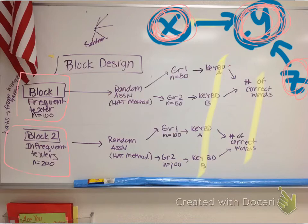And I started, instead of doing the three groups and then drawing a line and seeing random assignment, I started just doing what the book did. And they drew an arrow and said, okay, we need to randomly assign to two groups. We have our 100 frequent texters. Group 1, group 2 of 50 each. One gets keyboard A, one gets keyboard B. And then we look at the number of correct words. We do that again for infrequent texters. They get a random assignment using the HAT method. 100 in group 1, 100 in group 2. Keyboard A, keyboard B, and we look at the number of correct words.